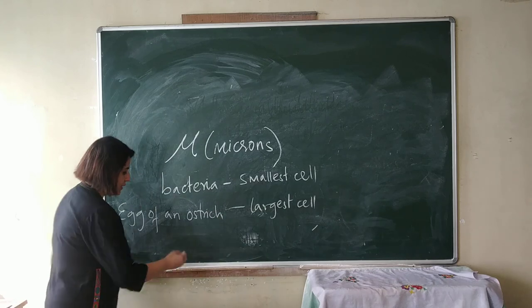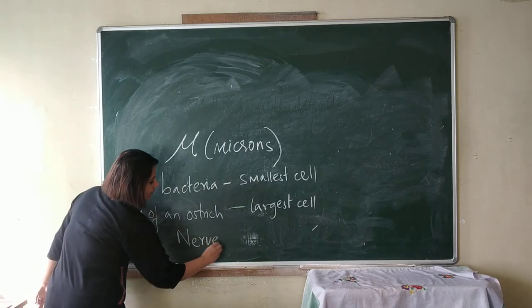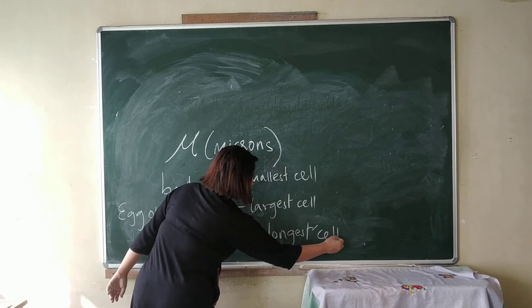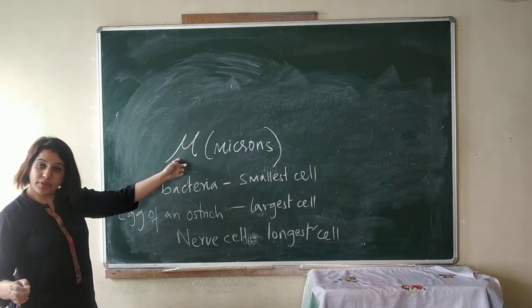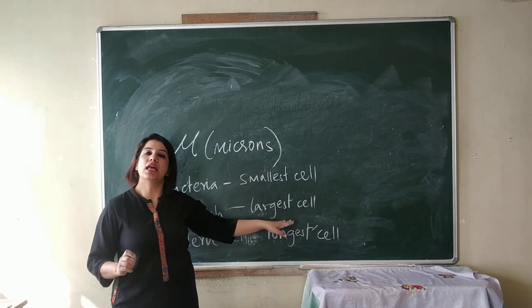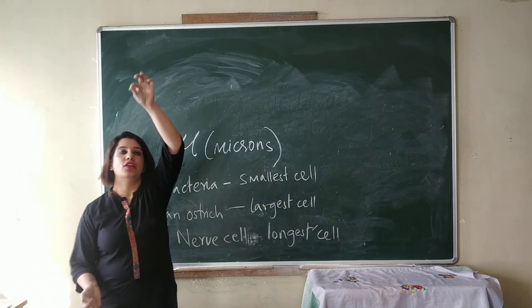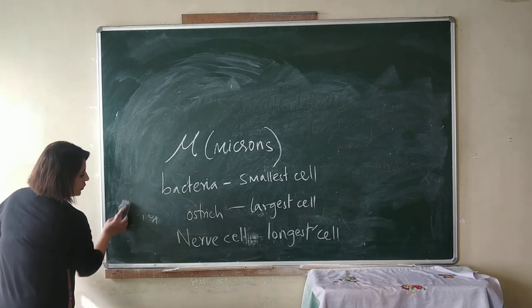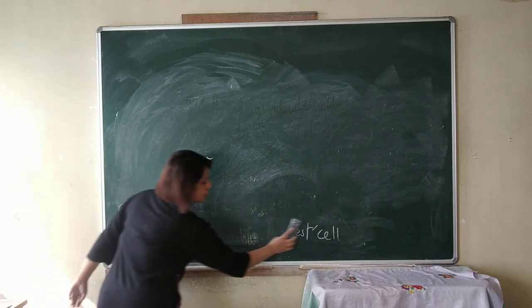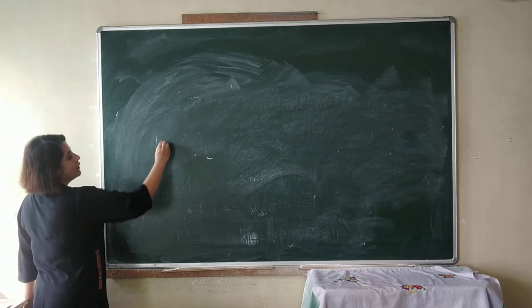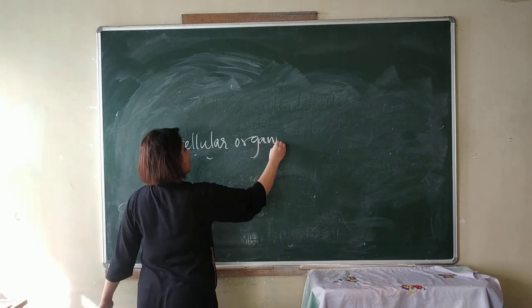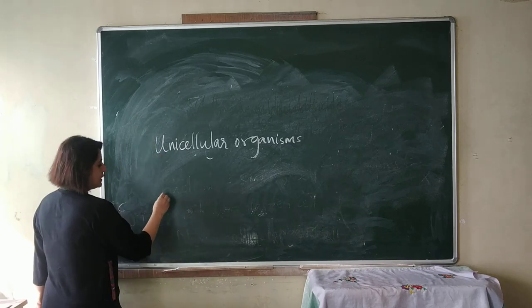Now we come to the longest cell. The longest cell in our body is the nerve cell. So: size of a cell is measured in microns; bacteria is the smallest cell; egg of an ostrich is the largest cell; and nerve cell is the longest cell. Depending on the number of cells, organisms are divided into two types: unicellular organisms and multicellular organisms.